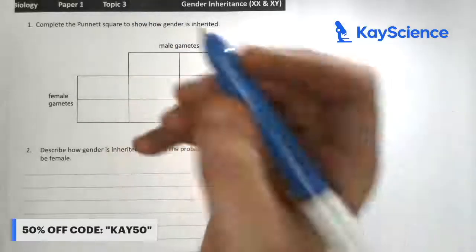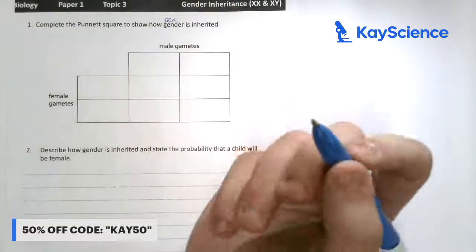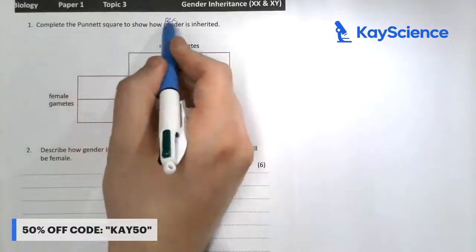We're now looking at gender inheritance, so sex inheritance. Complete the Punnett Square to show how sex is inherited.